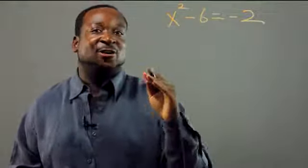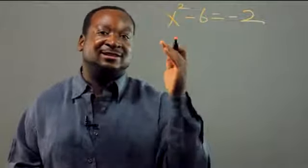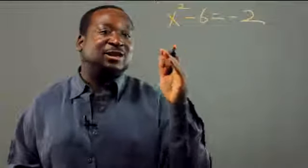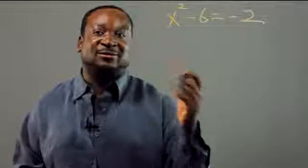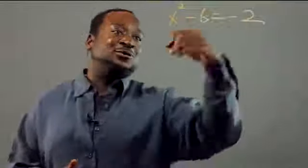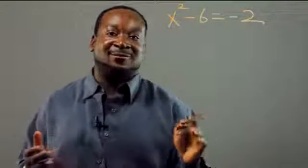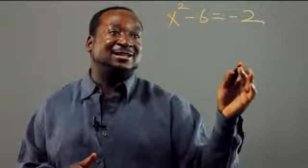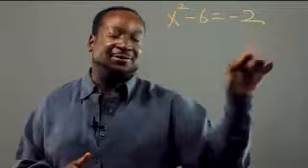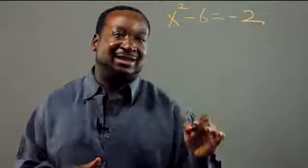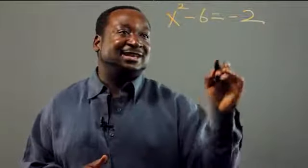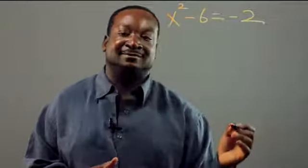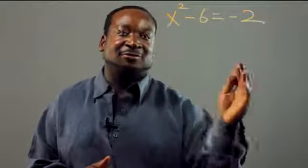This helps you understand the steps as you go along and it also helps you not to lose anything. Some people, even professionals, will just say 'move the 6 to the other side.' But in doing so, it could cause an error because when you move it to the other side, you have to multiply by negative 1 and lots of people forget that. They'll move it to the other side and just keep it as negative 6, and that'll throw off the value.